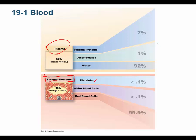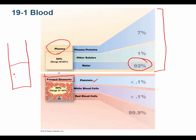Blood is roughly half cells and half plasma. When you spin a tube of blood down, you get about half cells and just under half plasma. The percentage of cells is called your hematocrit — women run around 40% and men can be up to 52%, so it's approximately half and half.